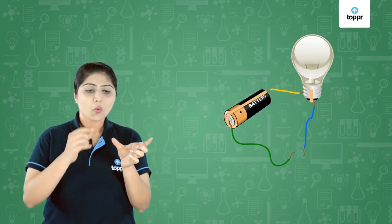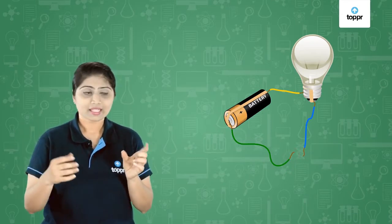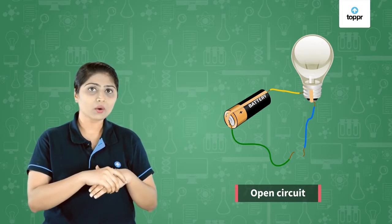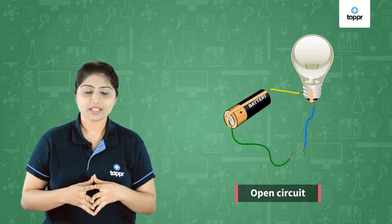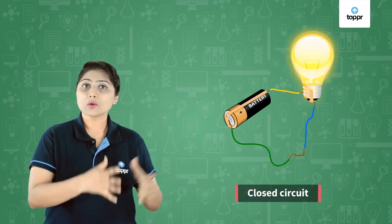Look at the circuit. It has a battery. One end of the battery is connected to a wire which is left open from its end, and the second end of the battery is connected to a wire which is connected to the bulb. From the other end of the bulb there is one more wire coming out, and the end of this wire is left open. So right now in the entire circuit we have two open endings of wires — this is called an open circuit. But if we connect both the ends of the wire, this circuit will be called a closed circuit.